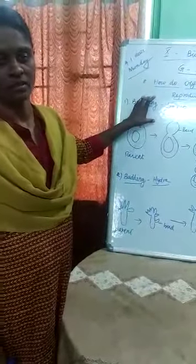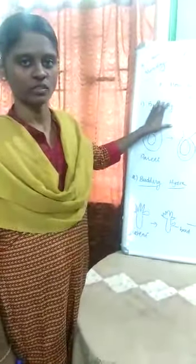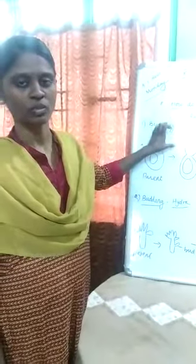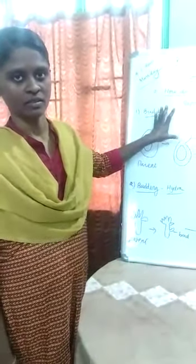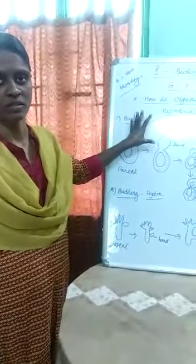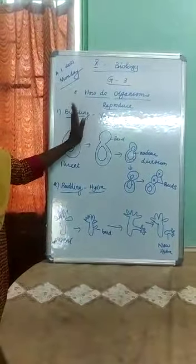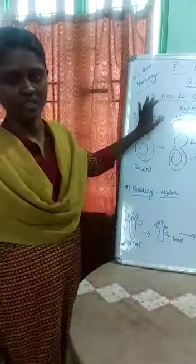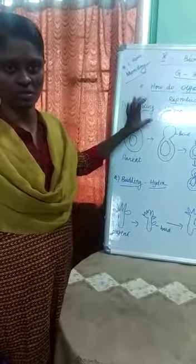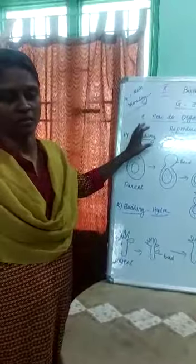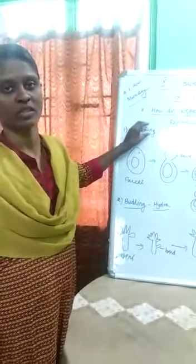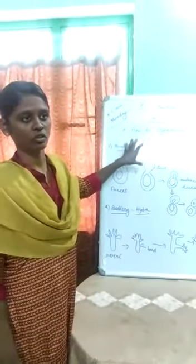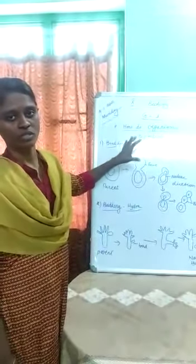What is the meaning of budding? Budding is a type of asexual reproduction in which a single parent produces one bud from its body. The bud grows and matures, and then it is detached from the parent body and grows as a new individual. You must mention compulsorily that budding is a type of asexual reproduction in which the organism produces a bud, and the bud grows and matures to produce a new individual.